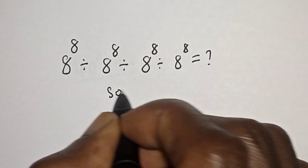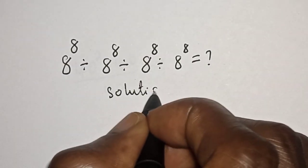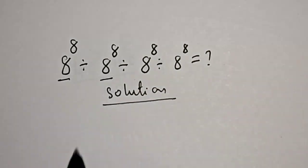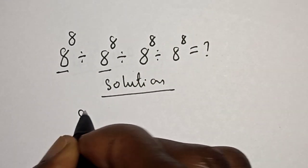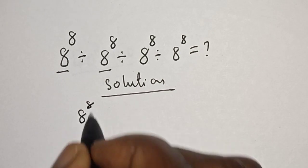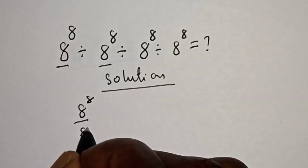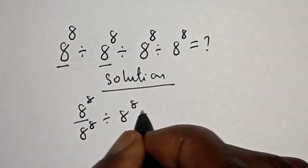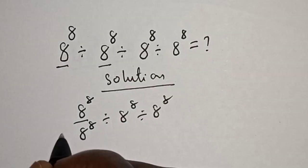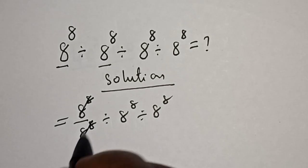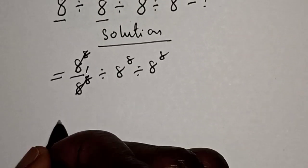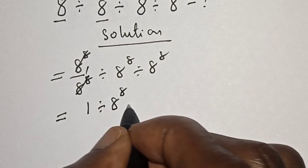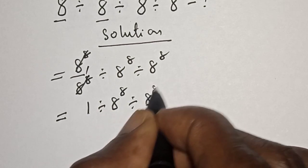Solution. We start with 8 raised to power 8 over 8 raised to power 8, divided by 8 raised to power 8, divided by 8 raised to power 8. The first pair cancels, giving 1. This is equal to 1 divided by 8 raised to power 8, divided by 8 raised to power 8.